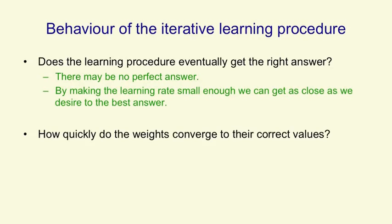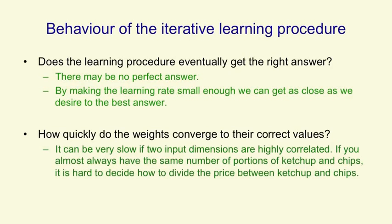Another question is, how quickly do we get towards the best answer? And even for a linear system, the learning can be quite slow, this kind of iterative learning. If two input dimensions are highly correlated, it's very hard to tell how much of the summed weight on both of those input dimensions should be attributed to each input dimension. So if, for example, we always get the same number of portions of ketchup and chips, we can't decide how much of the price is due to the ketchup and how much is due to the chips. And if they're almost always the same, it can take a long time for the learning to correctly attribute the price to the ketchup and the chips.